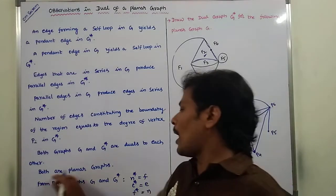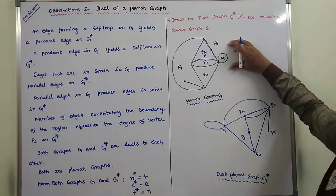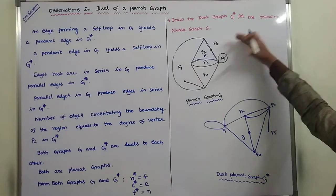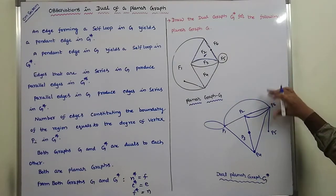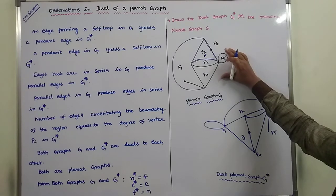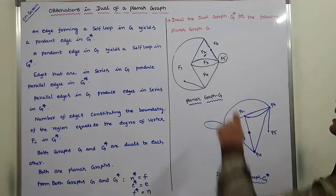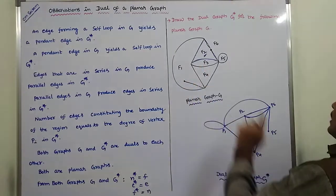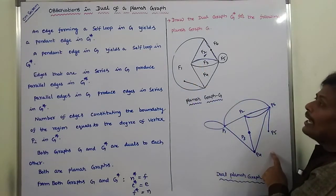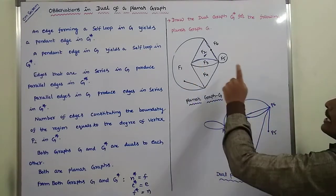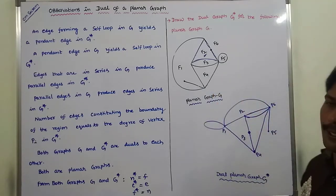Seventh point: both graphs G and G star are planar graphs. This graph is also a planar graph, and this is also a planar graph. There are no edge crossings in G and there are no edge crossings in G star. Hence, both G and G star are planar graphs.